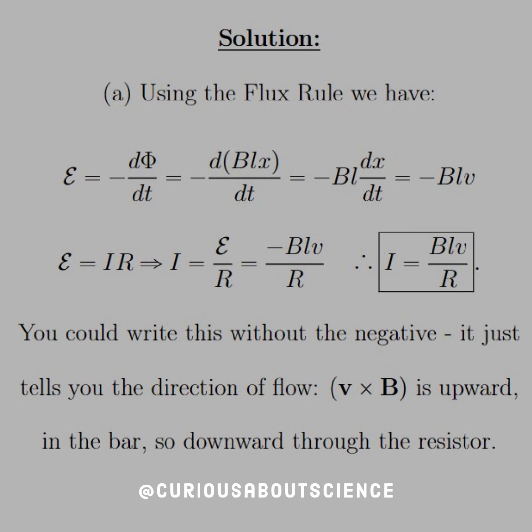So if this is true, then the EMF is also equal to IR, and we could solve for I, which is E over R, which we just found was negative BLV over R. Note, the negative sign here means that we're going with the direction that we're going, but I in general is equal to BLV over R, and it's up to us to use our context to determine which direction it is.